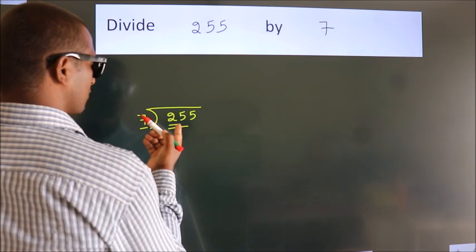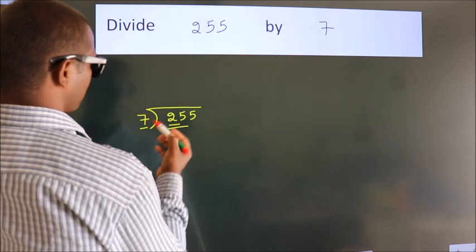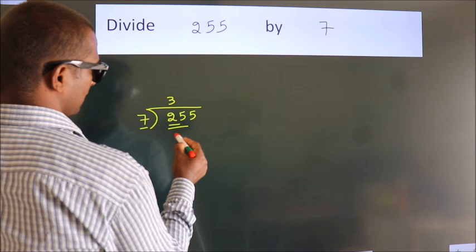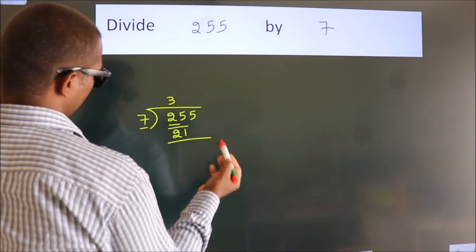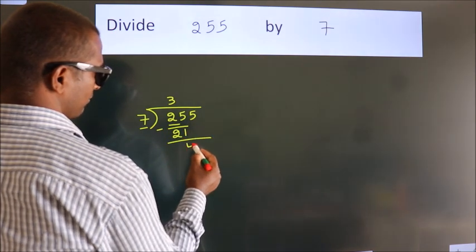A number close to 25 in 7 table is 7×3 is 21. Now we should subtract. We get 4.